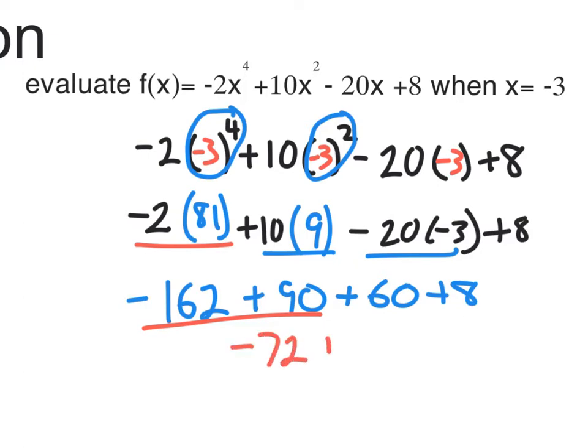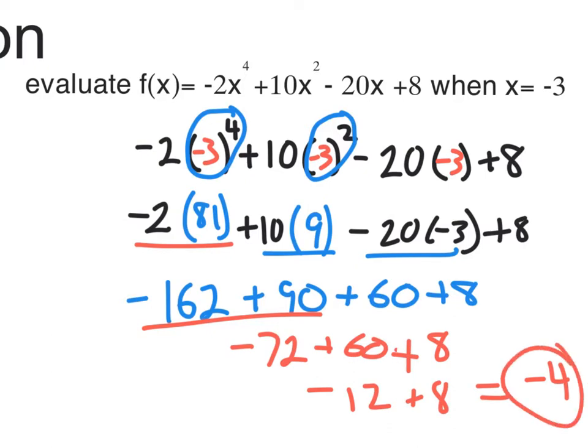We have addition and subtraction at the very end. If we just go from left to right, we have negative 162 plus 90 that's negative 72, plus 60 that's negative 12, and negative 12 plus 8 at the very end is negative 4.